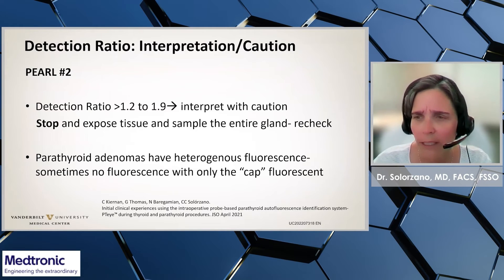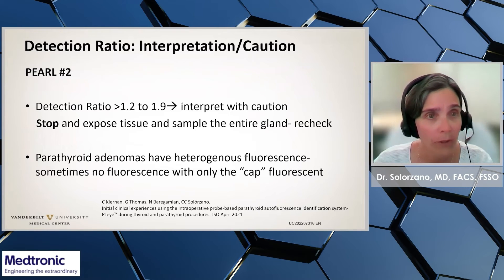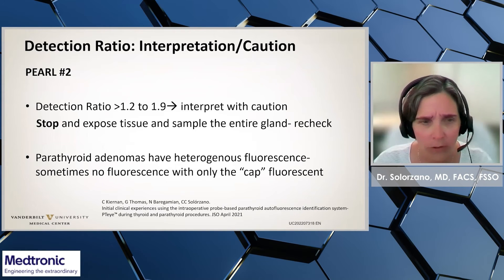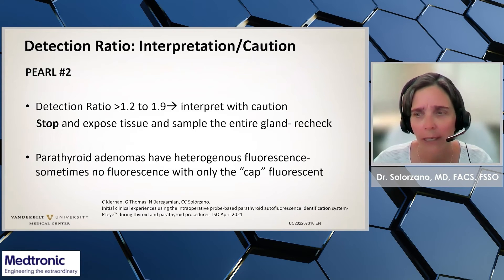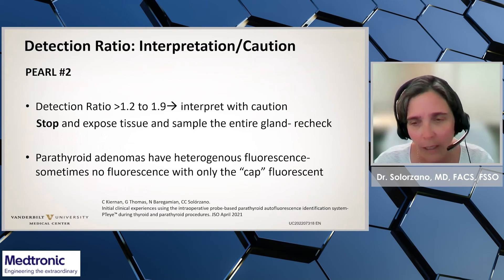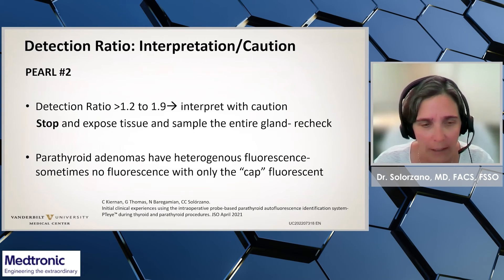A note of caution about detection ratios: most normal parathyroid glands have high detection ratios. A detection ratio between 1.2 and 1.9 should be interpreted with caution — you need to stop, expose the tissue, sample the entire gland, and recheck. Parathyroid adenomas may have heterogeneous fluorescence with areas of no fluorescence and then a cap area of normal tissue that is highly fluorescent.